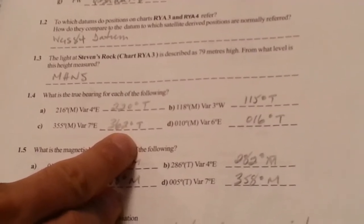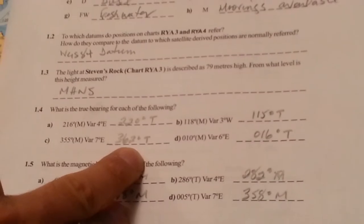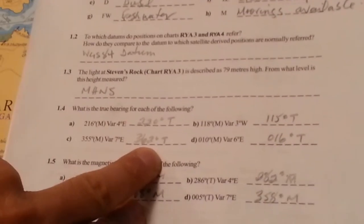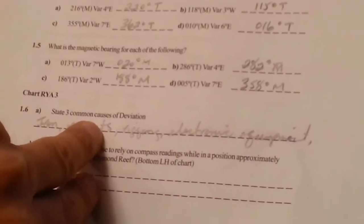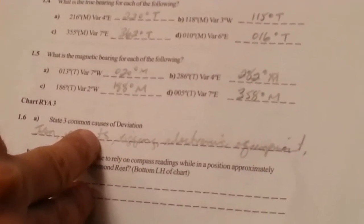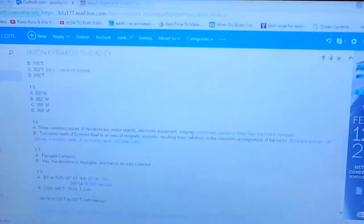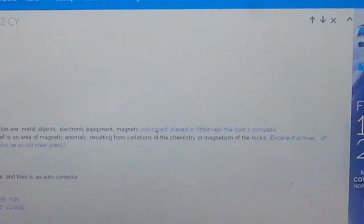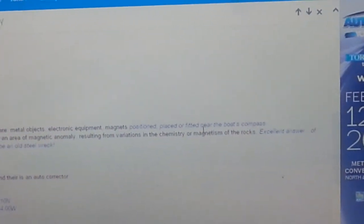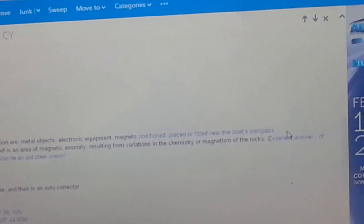What else? Actually he did a couple of other things too. For 1.6, what are the three common causes of deviation? My answer to him was three common causes of deviation are metal objects, electronic equipment, magnets. And he finished the sentence off for me by putting in 'positioned, placed, or fitted near the boat's compass.' So that's a proper full answer. I'll have to remember that.